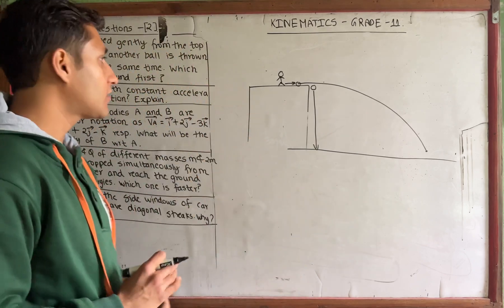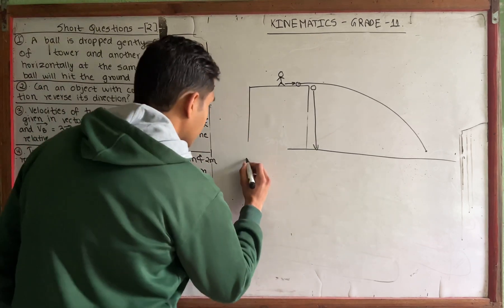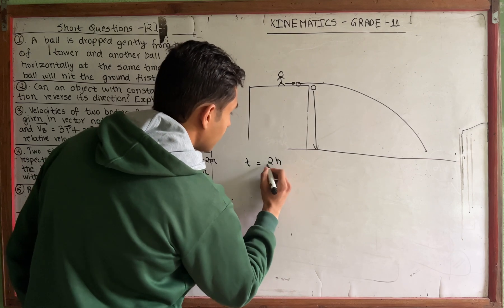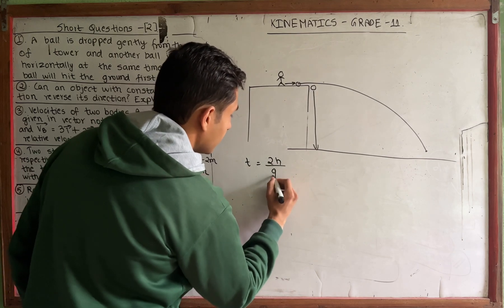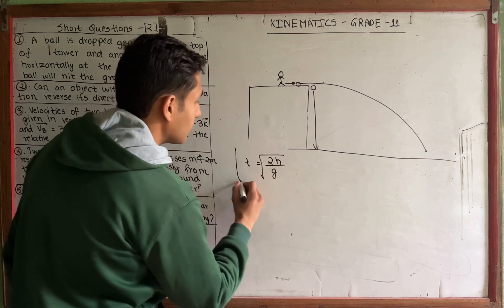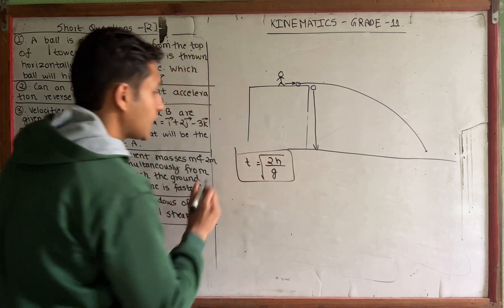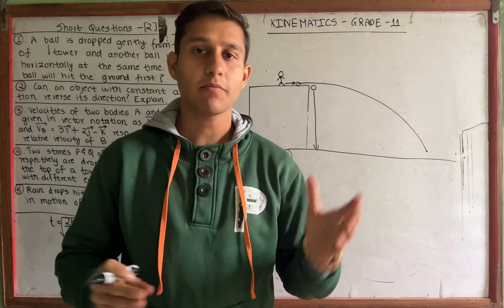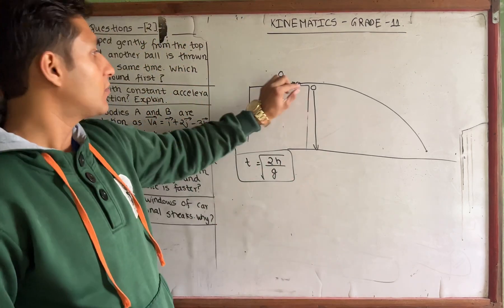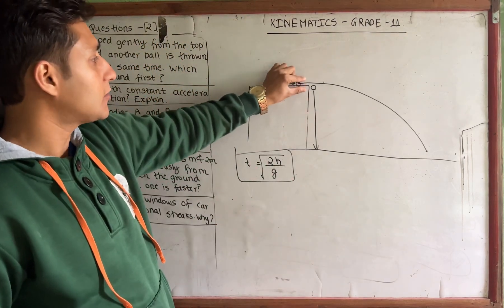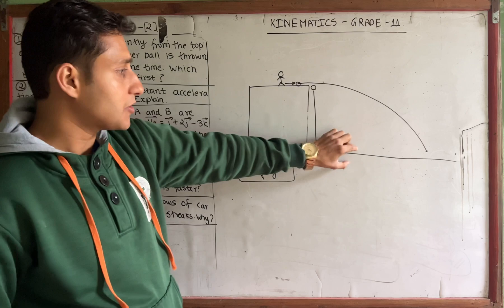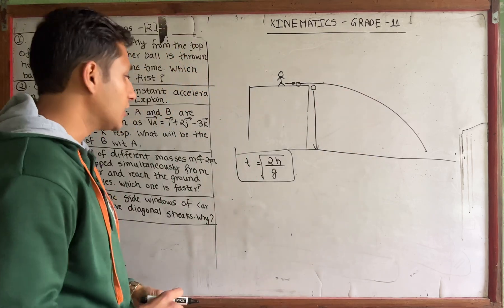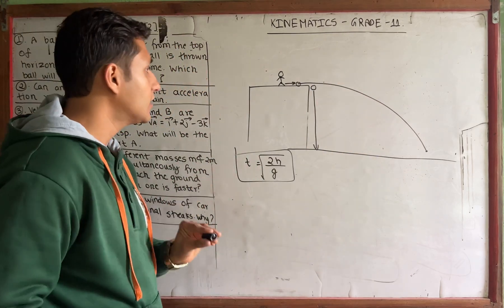The main reason is this formula: T equals √(2H/G). This formula is the time of flight. We will work with the time of flight formula.